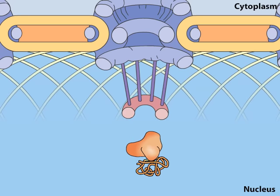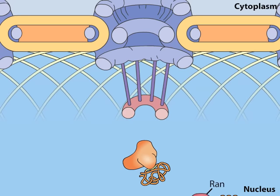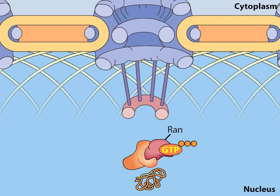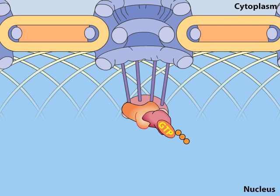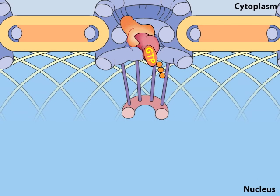At the nuclear side of the pore, the complex is disrupted by the binding of a protein called RAN to importin. RAN carries a molecule of GTP. This binding changes the conformation of importin, which then releases its cargo protein into the nucleus. The importin-RAN complex is then re-exported through the nuclear pore.